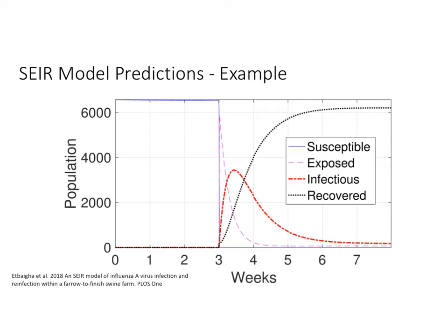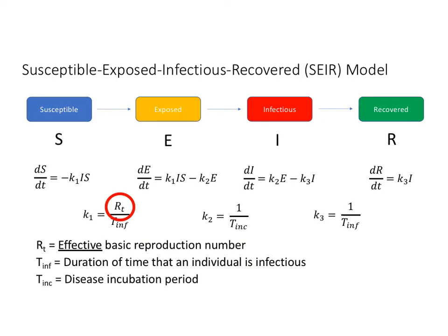Using this type of model we can predict the relationship between the susceptible, exposed, infectious, and recovered populations. An example is shown here for influenza A within a swine farm. We go from a very large susceptible population to a rapid exposure period where the number of exposed goes up then falls quickly, those convert to being infectious — which rises then falls — and then we have a growing population that is recovering.